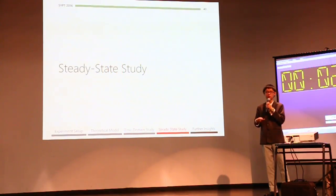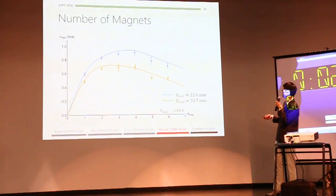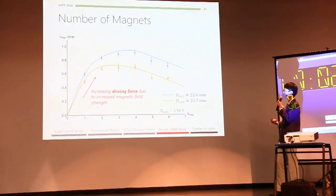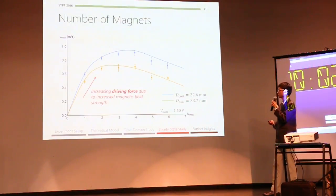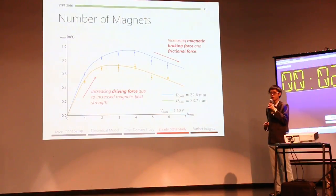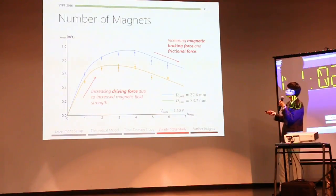So, I want to move on to discuss the terminal velocity results of our investigation. Here we see terminal velocity against the number of magnets. And we see that as we increase the number of magnets, there is initially an increasing trend. This is because of the increased magnetic field strength as the number of magnets is increased, therefore resulting in a higher driving force. However, at the same time, the braking force and friction also increases because of the higher mass of our train, and therefore, we know that there is a plateau and a decrease of speed thereafter.